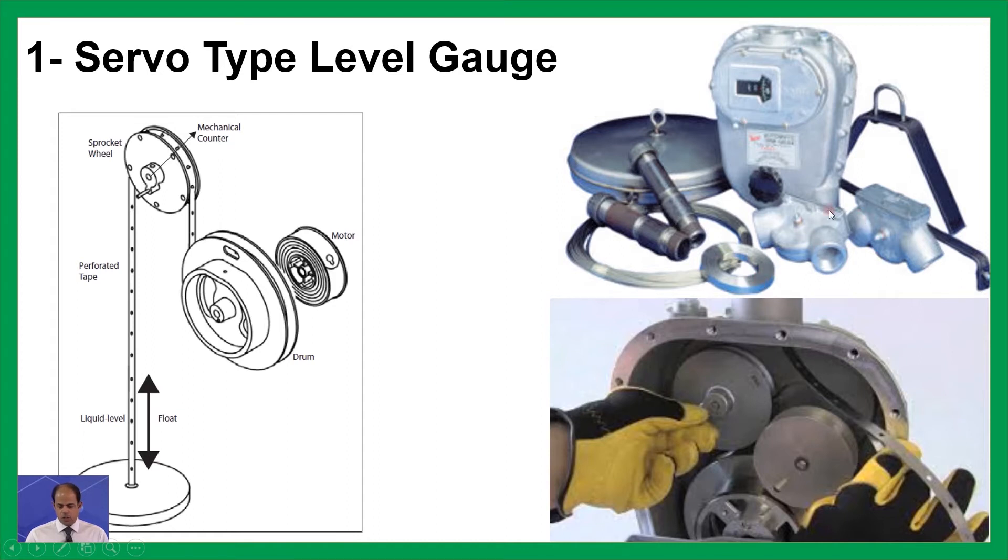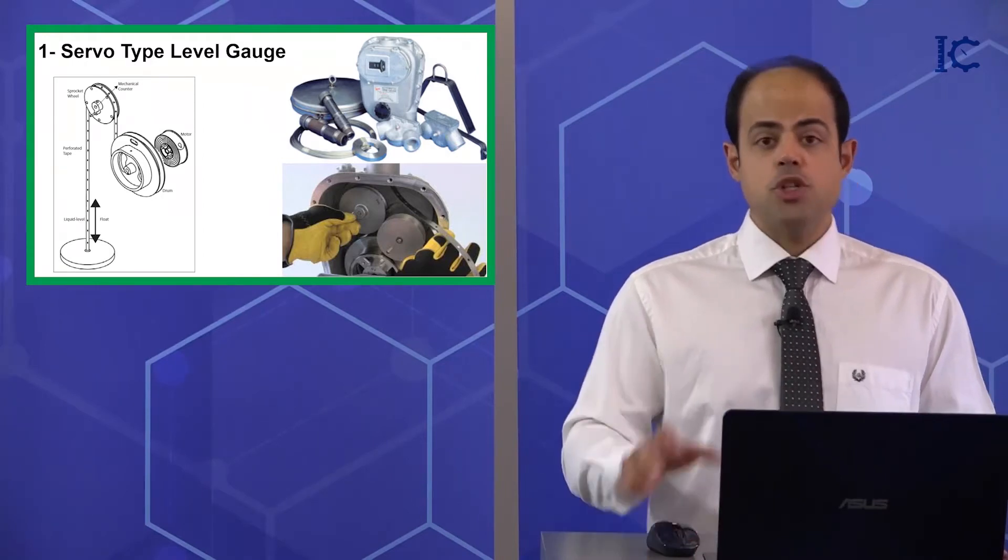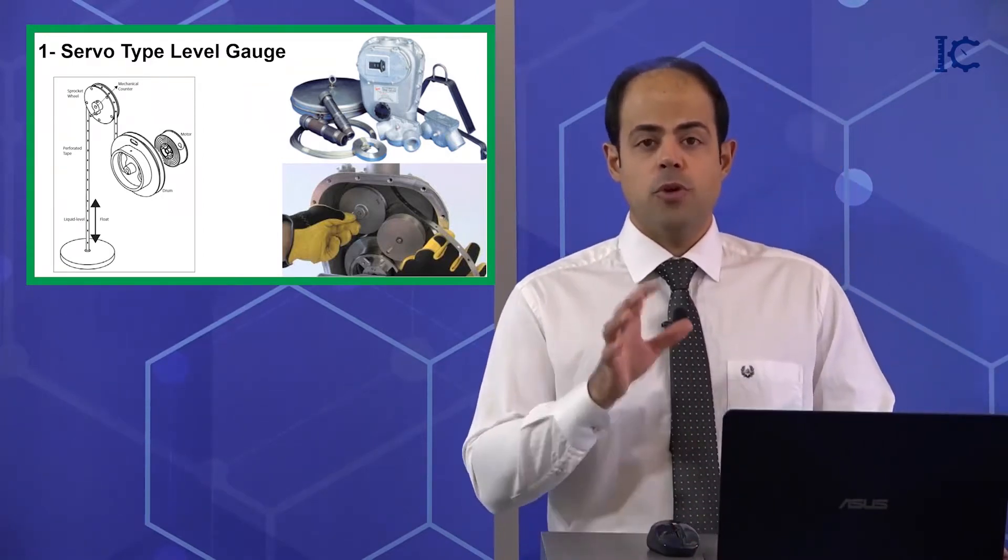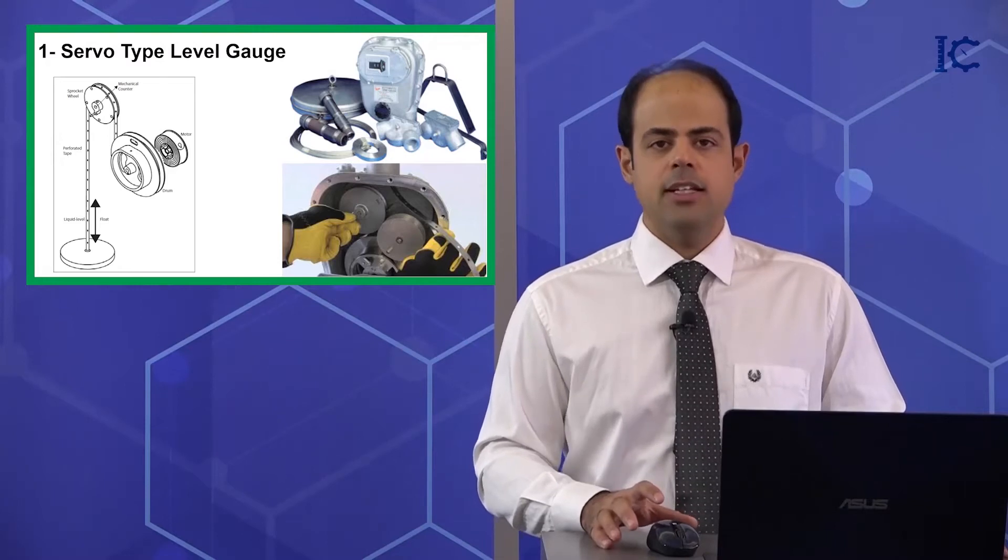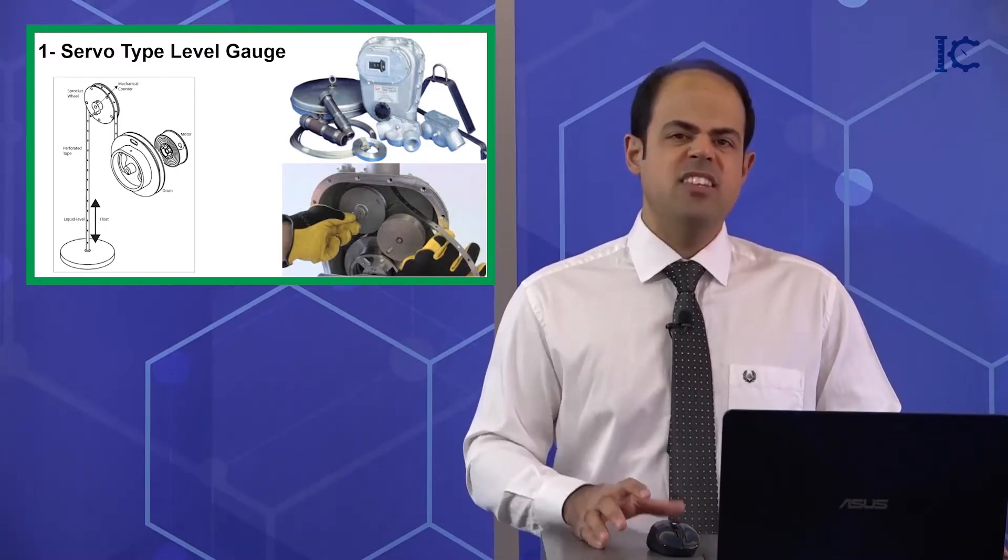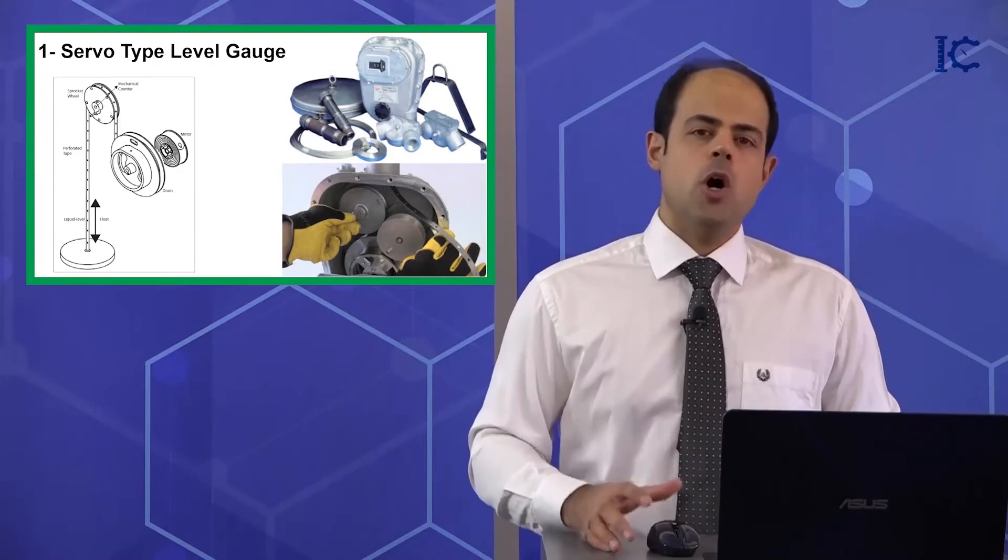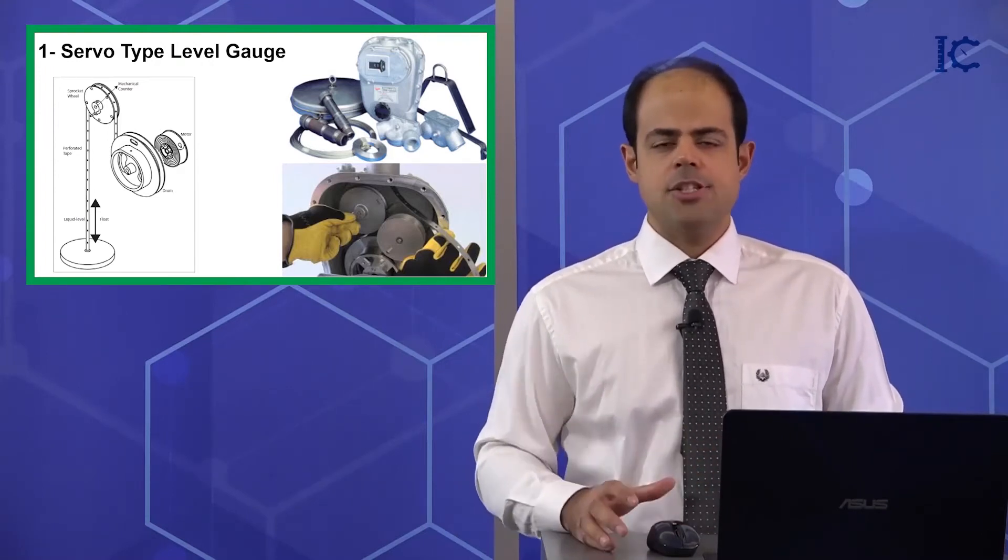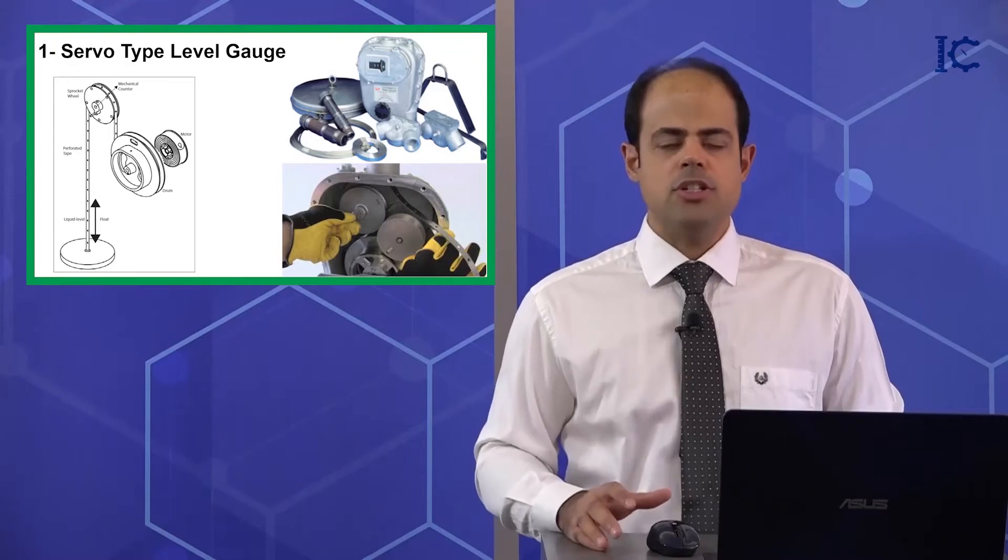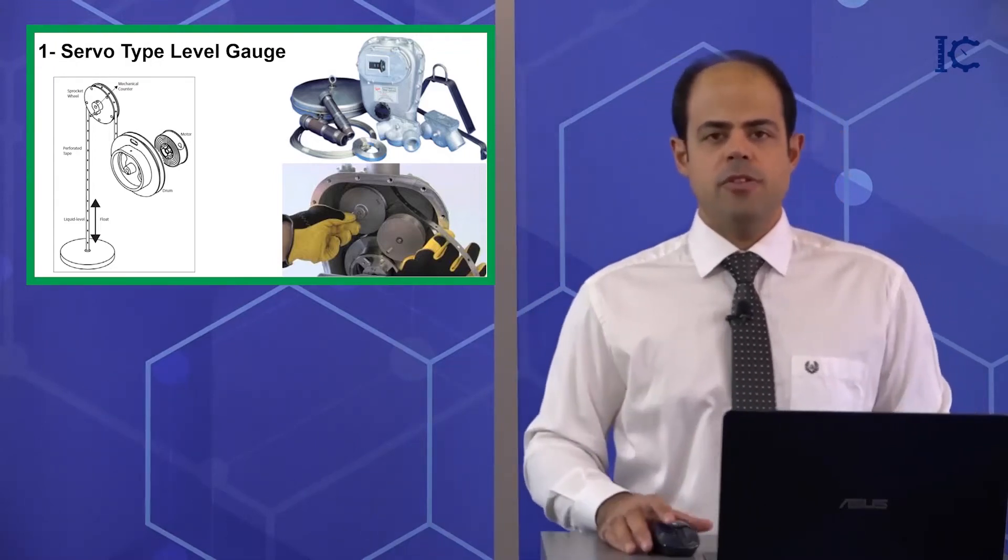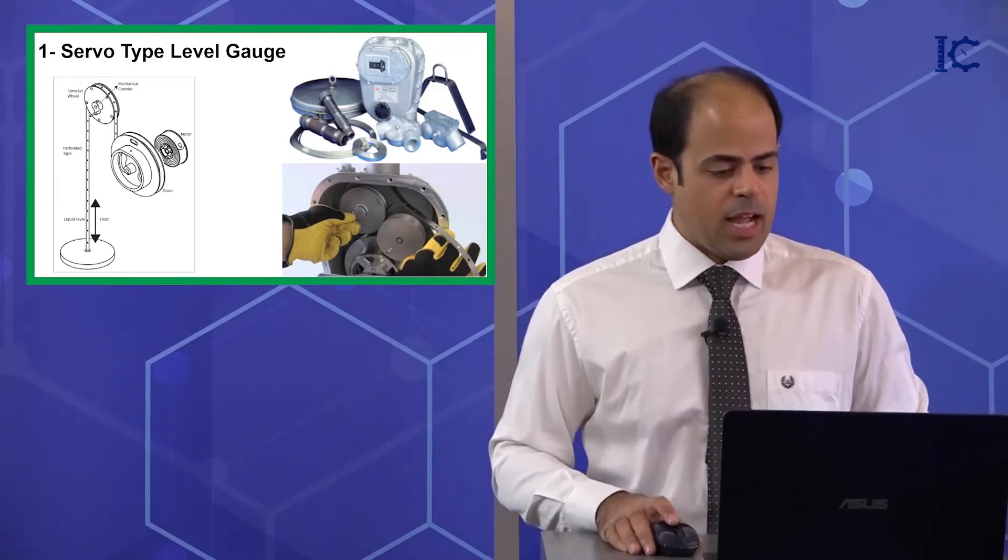This one is the measuring tape, and you can see two chef elbows here and some brackets which are used for installation of this device. There are pulleys and sprockets inside of the servo-type level gauge. This one is just working mechanically. It doesn't have any electronic devices such as hall effect sensors, magnet sensors, or proximity switches inside.